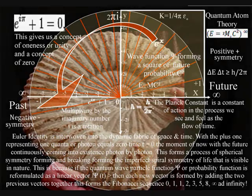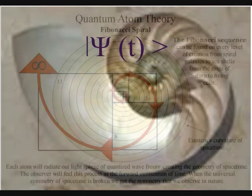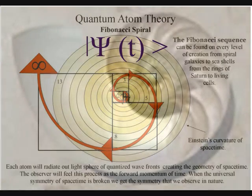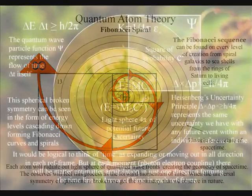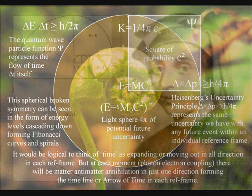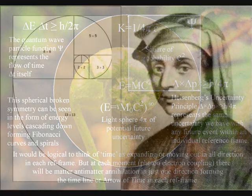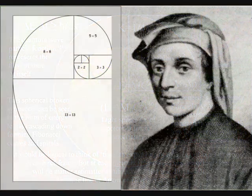This is because, if the quantum wave particle function, or probability function, is reformulated as a linear vector, then all the information I can find says that each new vector is formed by adding the two previous vectors together. This forms the Fibonacci sequence.